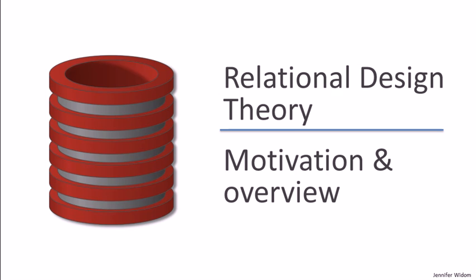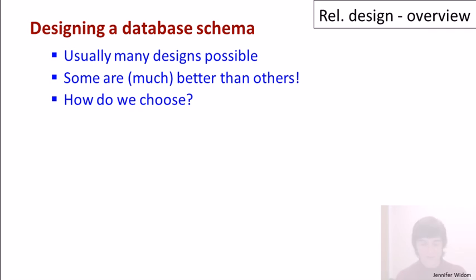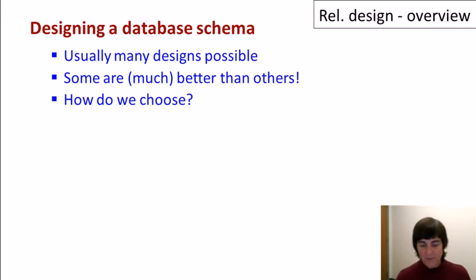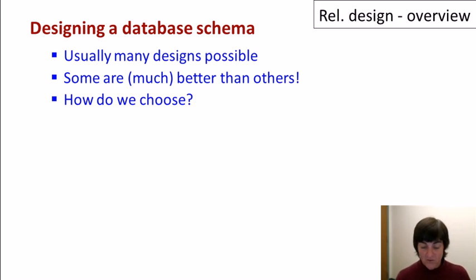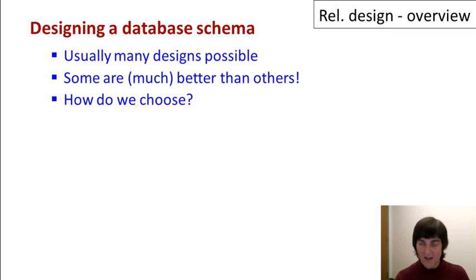In this sequence of videos, we'll learn about designing good schemas for relational databases. Suppose we're building a database for an application and we have to figure out what schema we want to store our data. Usually there are many different possible schema designs for a database, and databases do tend to get quite complicated. Some designs are much better than others, so how do we choose what design to use?